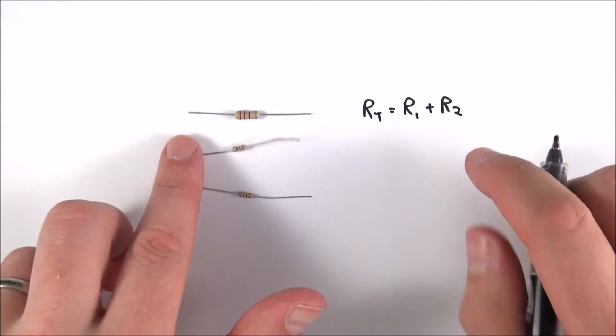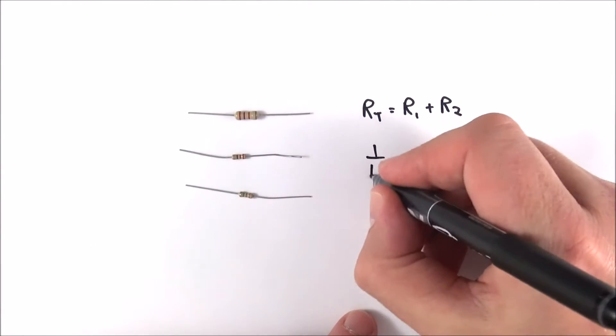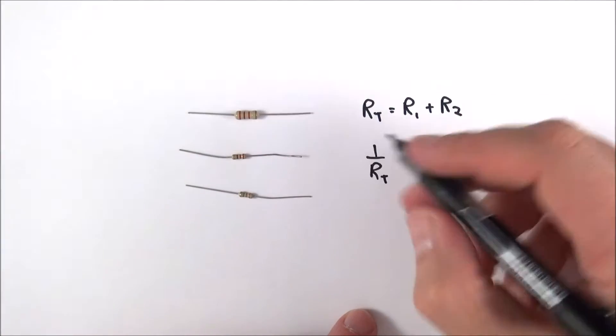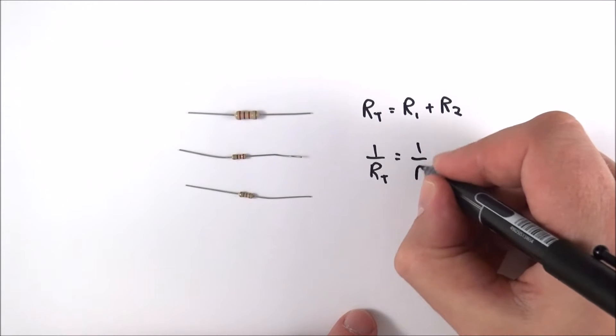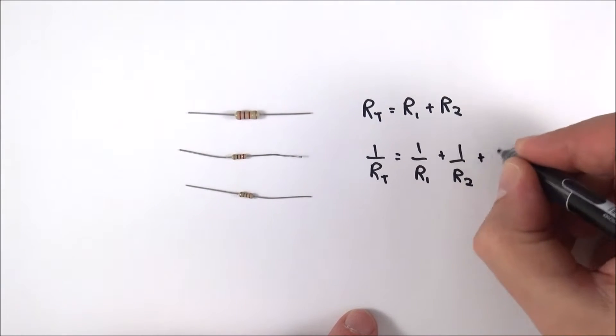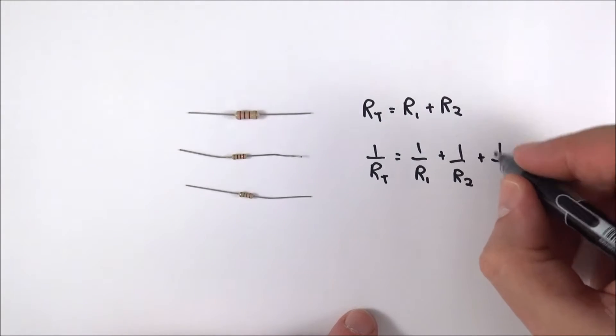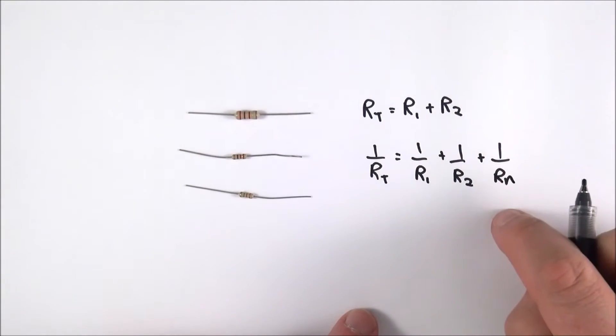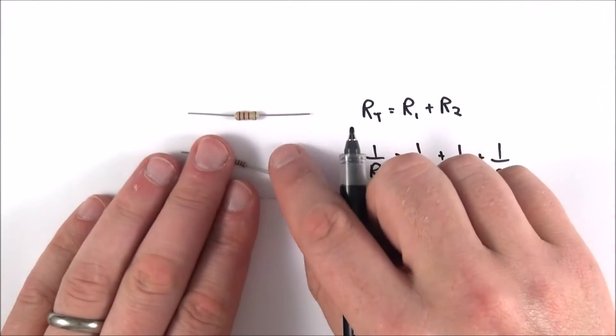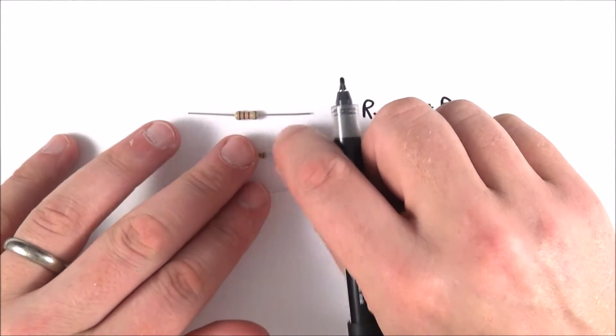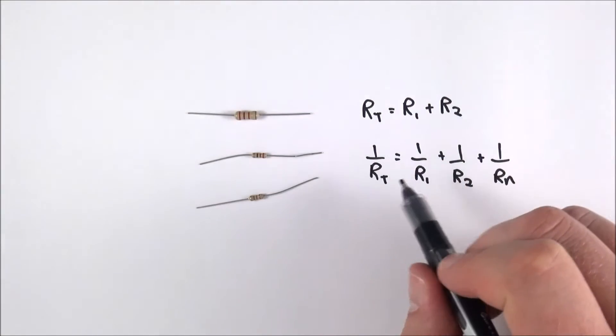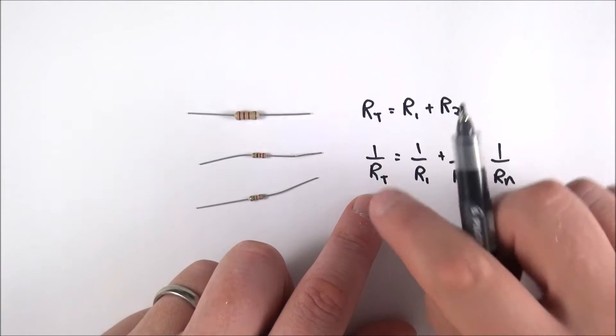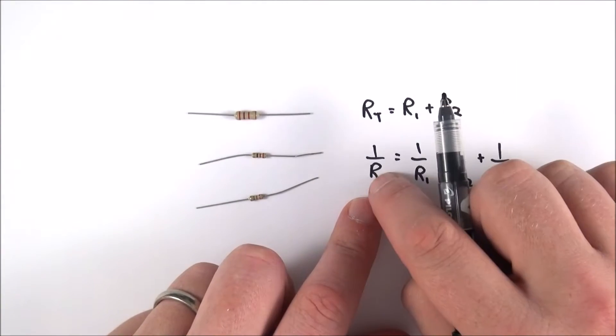If, however, they're in parallel, then we find that 1 over Rtotal, their total combined resistance, is equal to 1 over R1 plus 1 over R2, and so on, for however many resistors you might have. So as you have resistors in parallel, the combined resistance goes down. A point to note is that you've got to make sure that you don't just give your value as 1 over Rtotal, you've got to take the inverse of it to get your value of Rtotal.